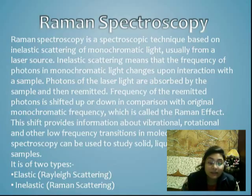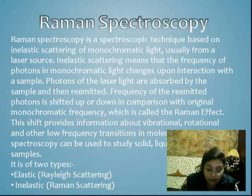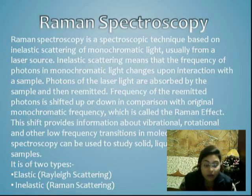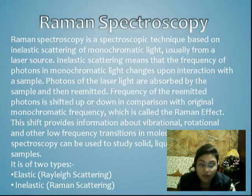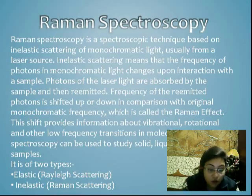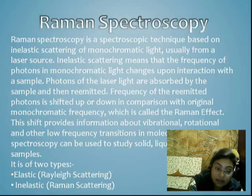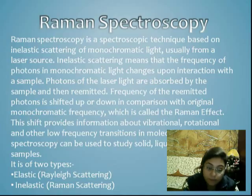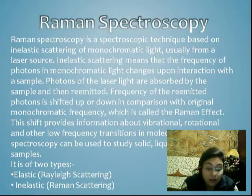Next is Raman spectroscopy. Raman spectroscopy is a spectroscopic technique based on inelastic scattering of monochromatic light, usually from a laser source. Inelastic scattering means that the frequency of photons in the monochromatic light changes upon interaction with the sample. Photons of the laser light are absorbed by the sample and then re-emitted; the frequency of the re-emitted photons is shifted up or down compared to the original monochromatic frequency — this is called the Raman effect. This shift provides information about vibrational, rotational, and other low-frequency transitions in molecules.